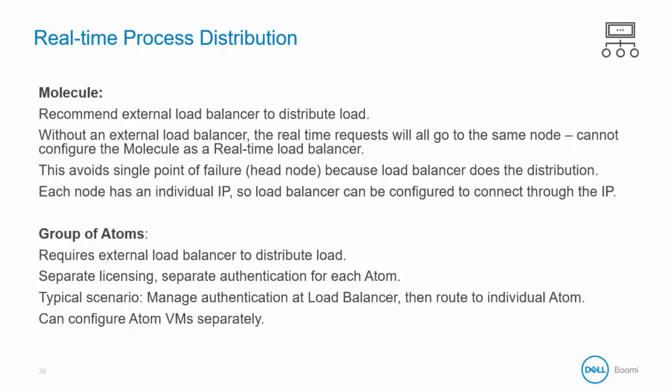Real-time executions are handled differently than scheduled executions. If you are running a molecule or group of atoms for real-time executions, typically customers use an external load balancer outside of Boomi. You can handle authentication at the load balancer and distribute load to the atom or node. Without that external load balancer, all real-time requests would go to the same node. To avoid that bottleneck, the load balancer can use each node's IP address to send requests to the appropriate node.